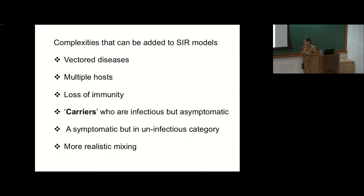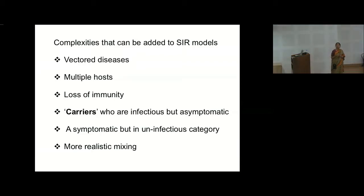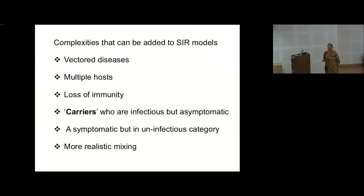The basic SIR model is a very simple model — the original Kermack and McKendrick paper has many more calculations than what I've shown here. These are some of the factors you can include to make a model more complex: diseases with vectors, multiple hosts, immunity loss, varying immunity, carriers who are infectious but asymptomatic, asymptomatic but uninfectious individuals, and more realistic mixing.